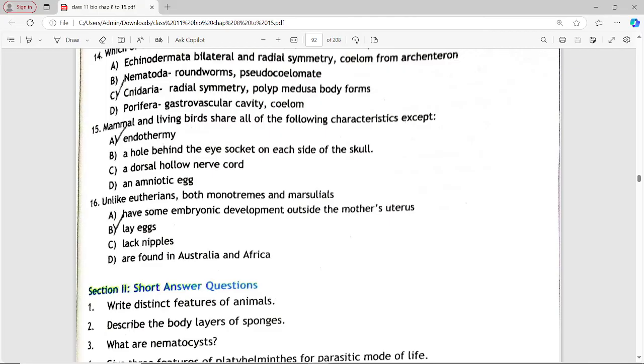Next is: mammals and living birds share all of the following characteristics except. Options are endothermy, a hole behind the eye socket on each side of the skull, a dorsal hollow nerve cord, an amniotic egg. Answer is option A, endothermy.